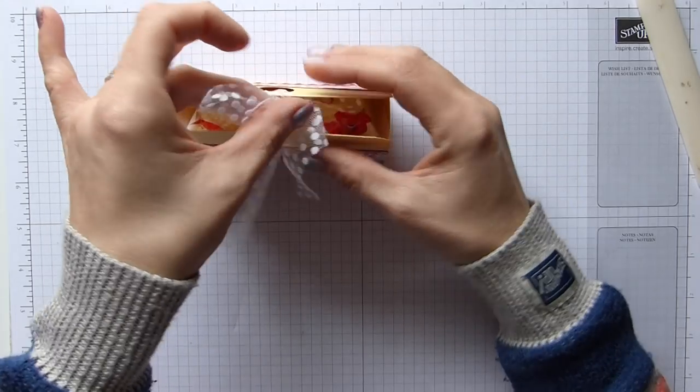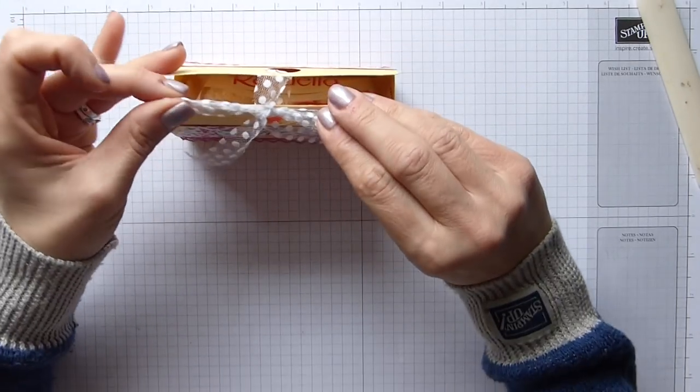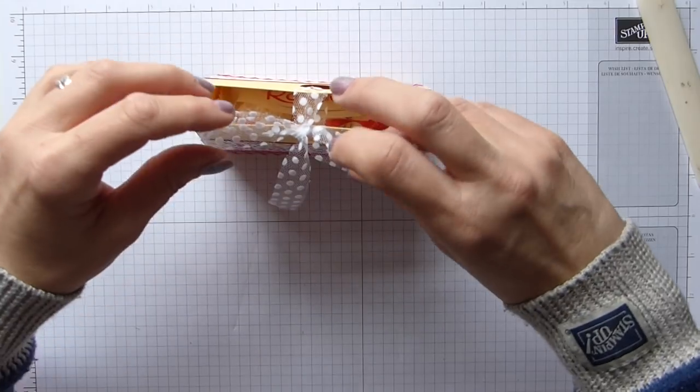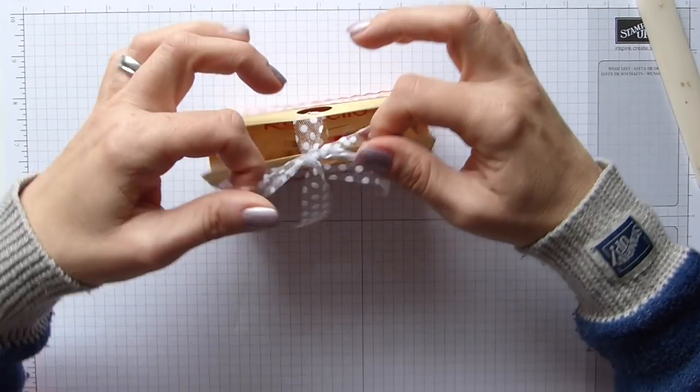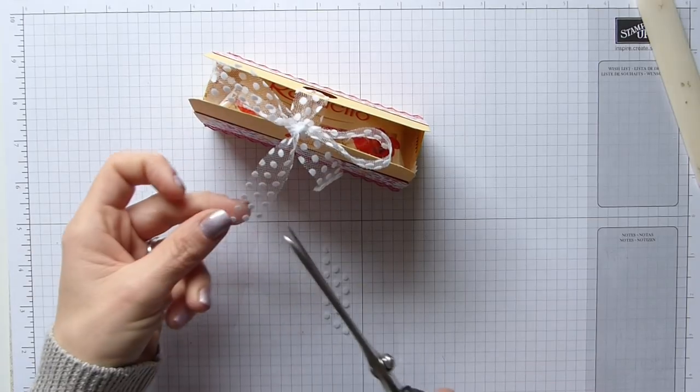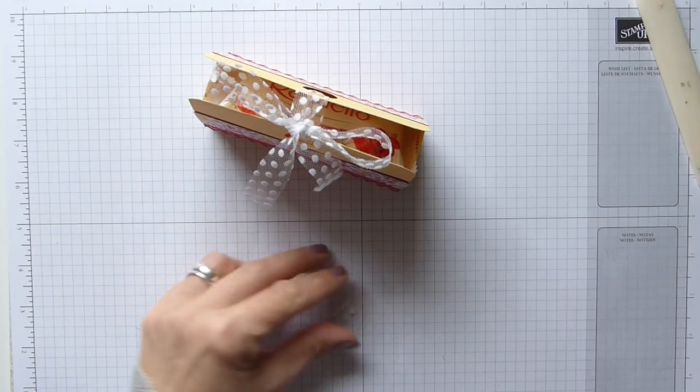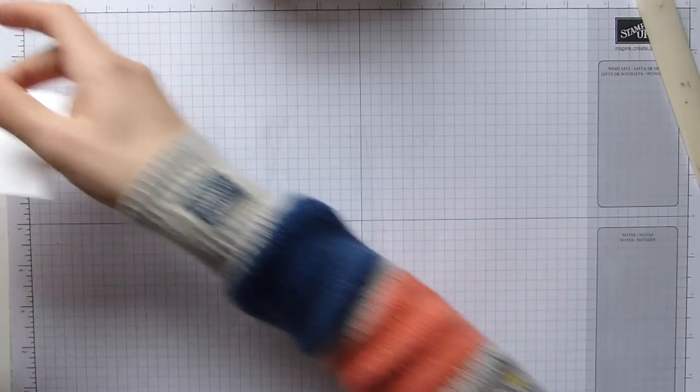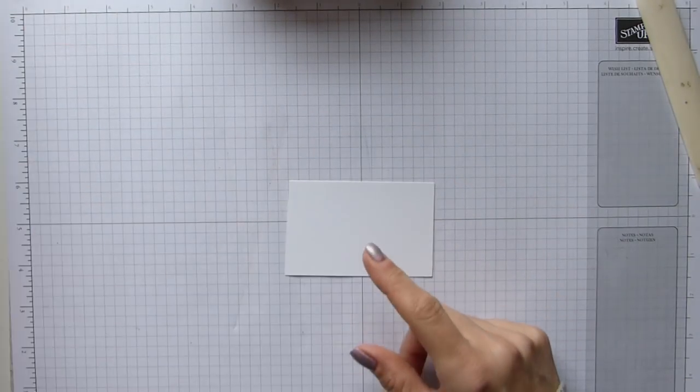Right, so this is going to be the front then, just because it looks prettier, and that's the way the bow fell. Just trim that, and trim that at more of an angle. Tidier finish.